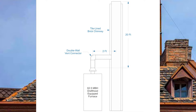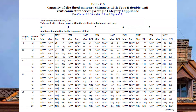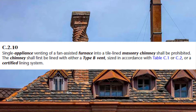The best way to get familiar with these tables is to do an example. I have a 62.5 MBH draft-hood-equipped furnace with a two-foot lateral and a 20-foot chimney. The vent connector is double wall, so we need Table C5. The first thing to notice in Table C5 is that the fan min/max columns say NA. That comes from GVR C210, which prohibits installing a single fan-assisted appliance into a chimney — only a single draft-hood-equipped appliance is allowed.